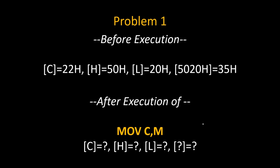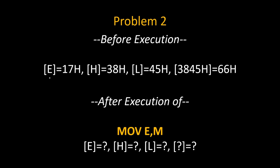Now here are some practice problems you can solve and write your answers in the comments. Problem 1: Before execution of MOV C comma M, content of C is 22H, H is 50H, L is 20H, and on memory location 5020H data is 35H. After execution, what will be the new value of C? Will it change the content of H and L, or the content of the memory location? Problem 2: Before execution of MOV E comma M, content of E register is 17H, H is 38H, L is 45H, so memory location 3845H has data 66H. After execution, what will be the new value of E register? Will it change the value of H or L register, or change the memory location content?